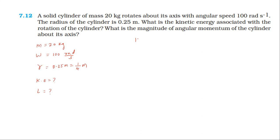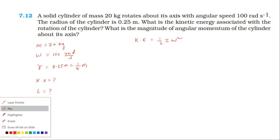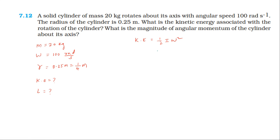The kinetic energy formula is half I omega squared. For a solid cylinder, the moment of inertia is mr squared by 2. So kinetic energy equals half into mr squared by 2 into omega squared.